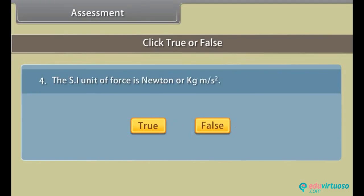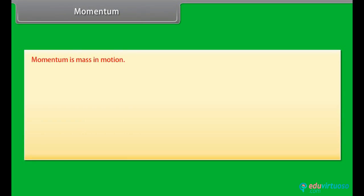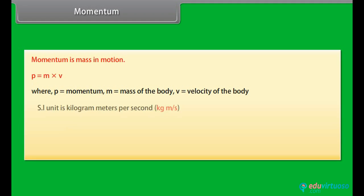Momentum. Momentum is mass in motion. P = m × v, where P is momentum, m is mass of the body, and v is velocity of the body. SI unit is kilogram meter per second.